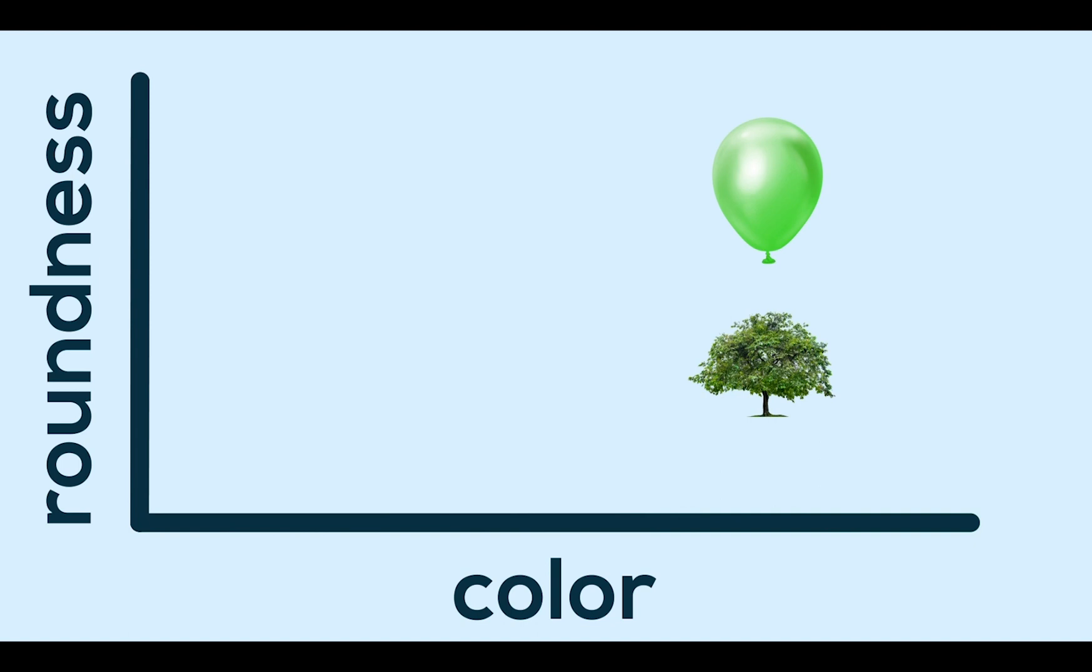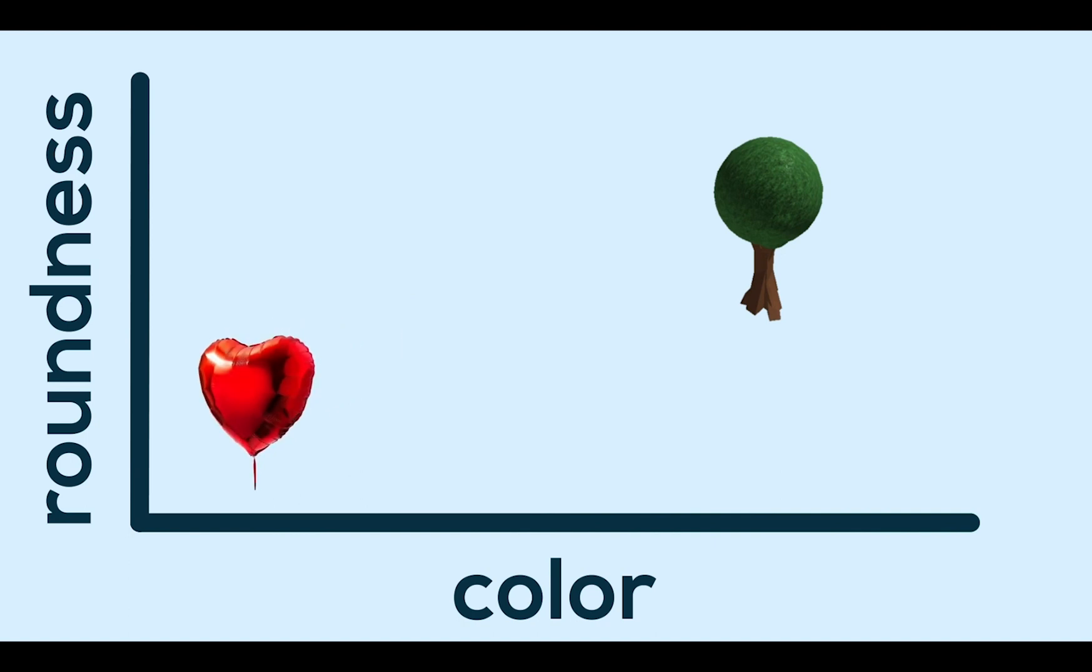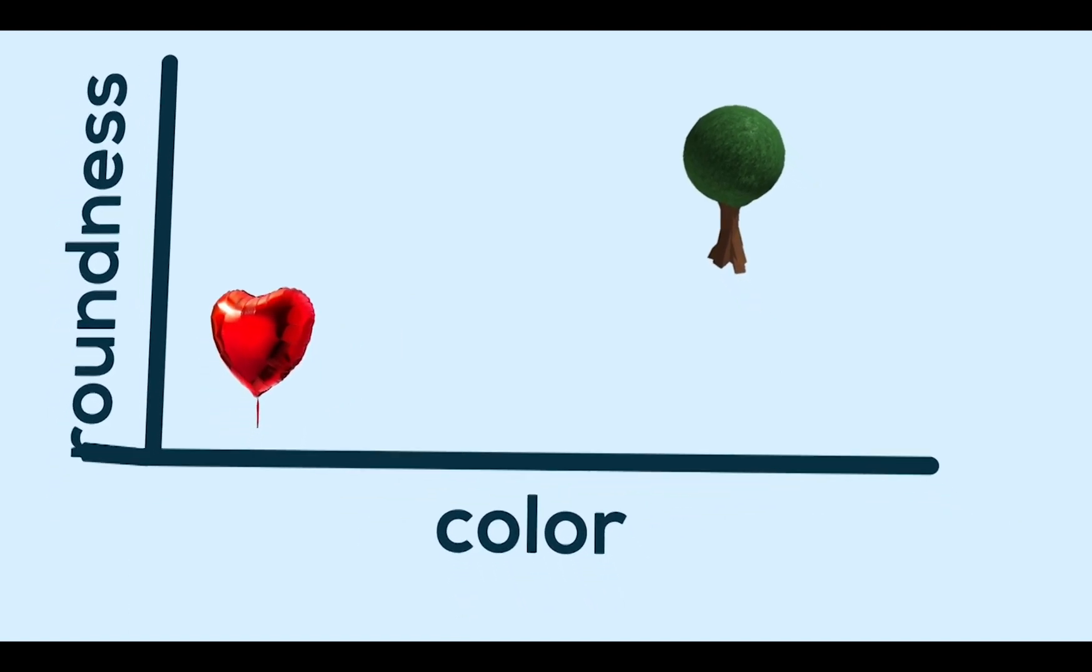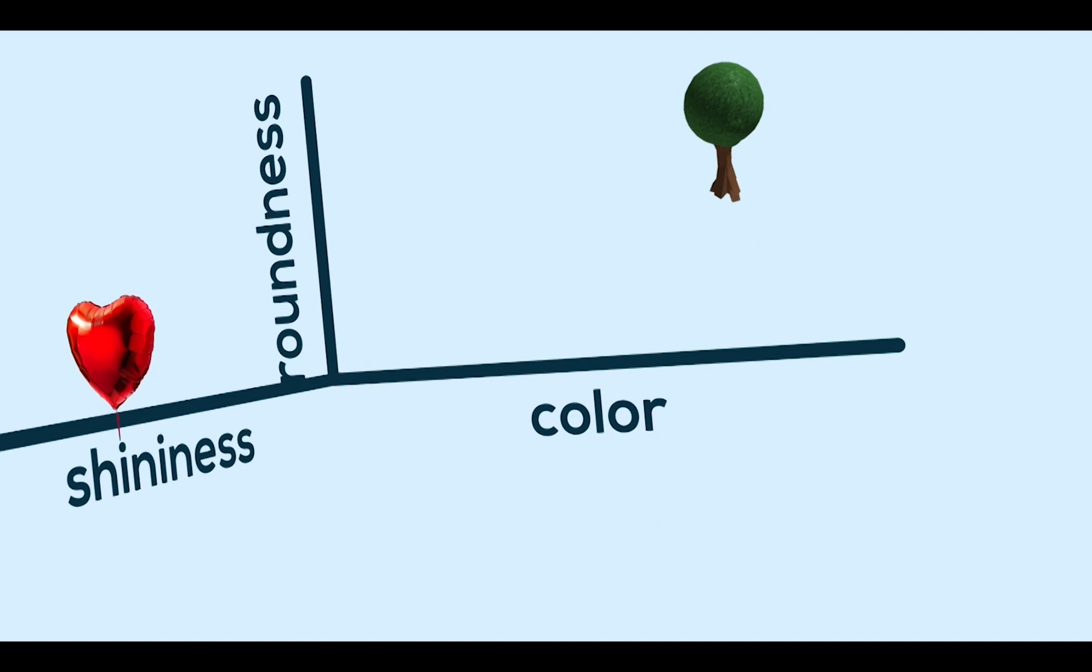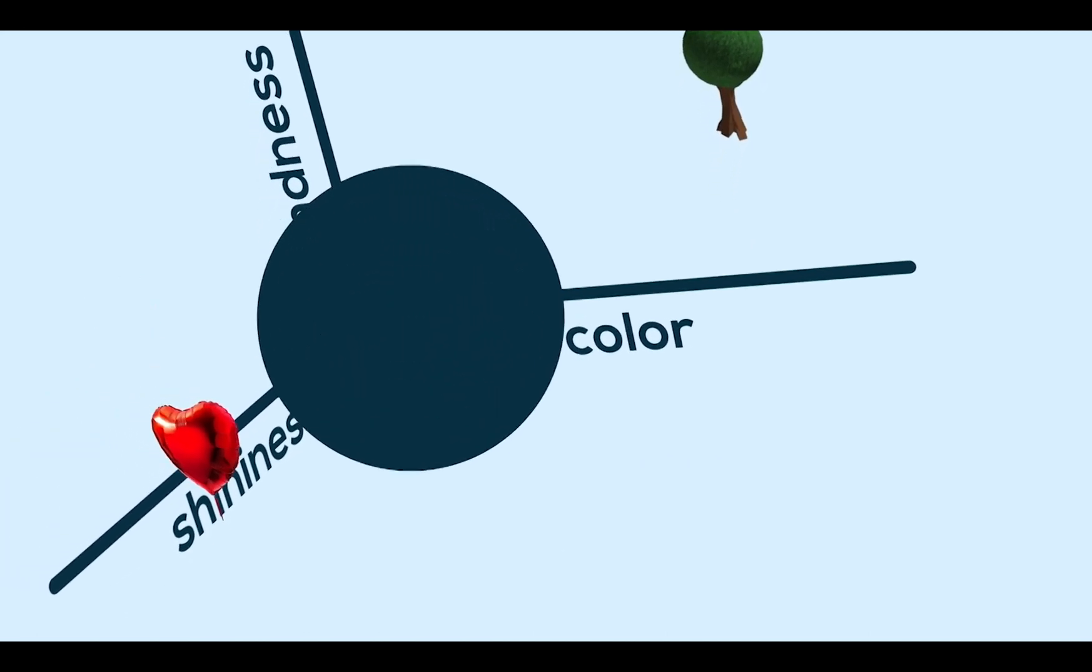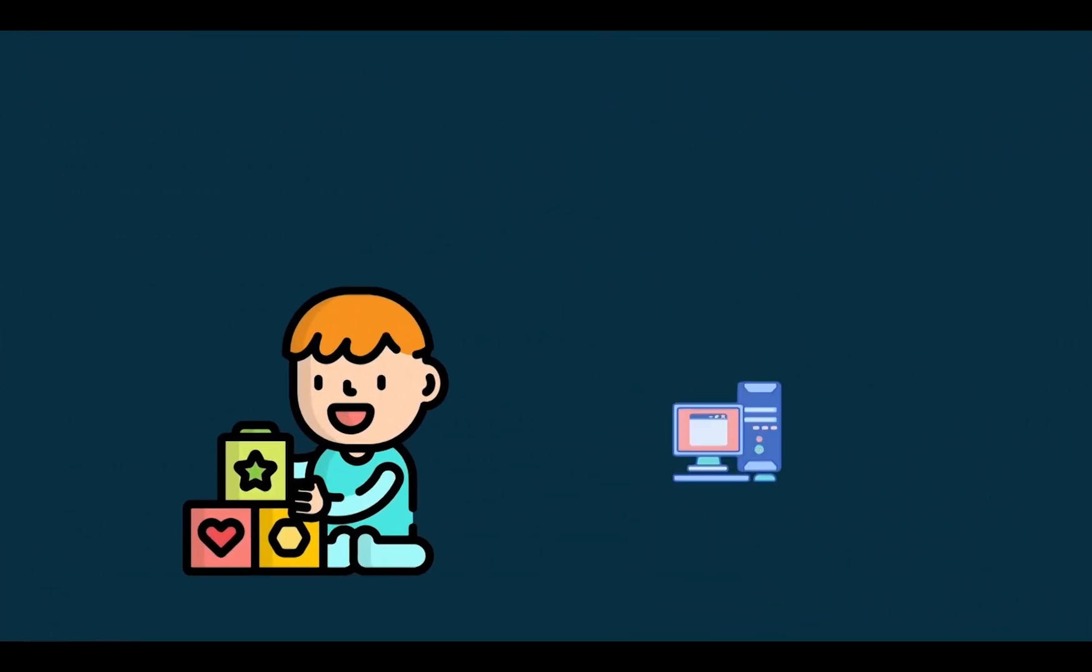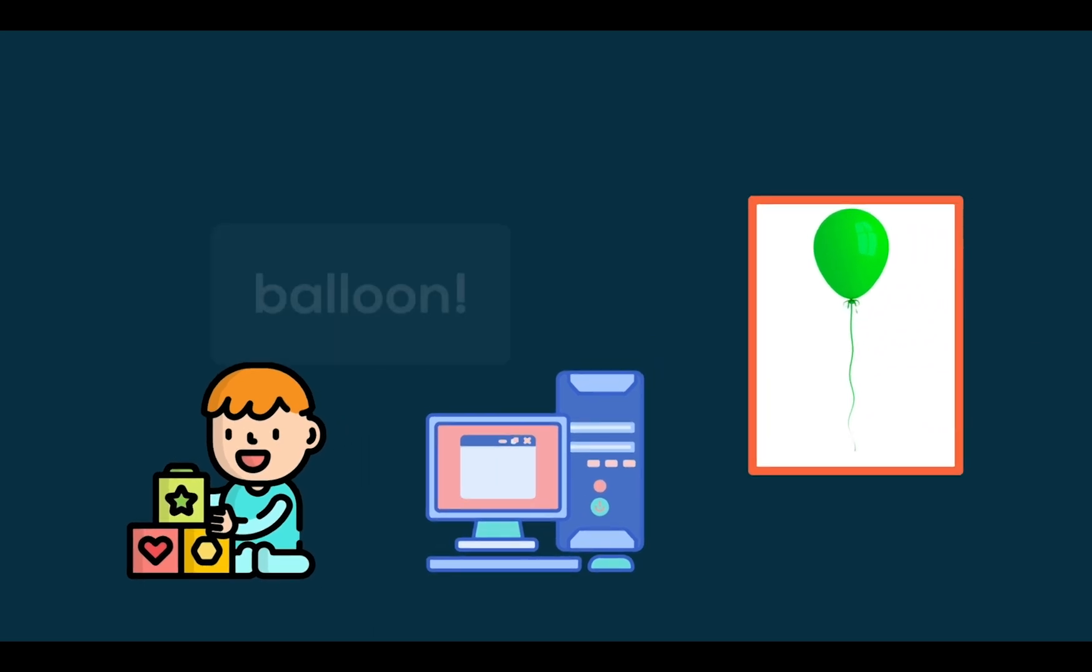But with more data, there could be a tree that's round and a balloon that's not. So in this case, our brain or the machine learning model will have to add another factor, maybe let's say shininess, as balloons usually have a shiny spot and trees don't. Now as we can see, we're at a three-dimensional space, and with just these three dimensions, a kid and a computer can determine trees from balloons pretty well.